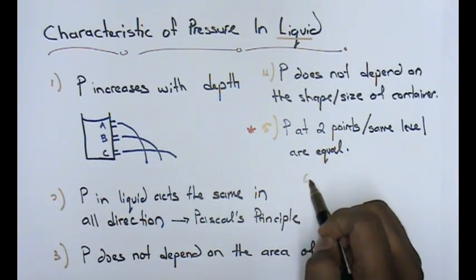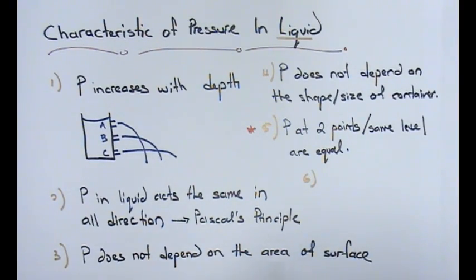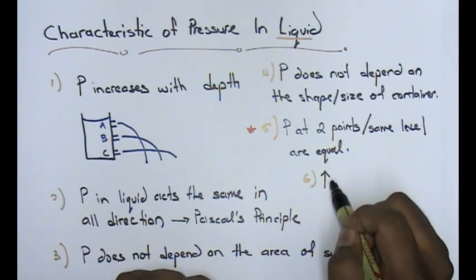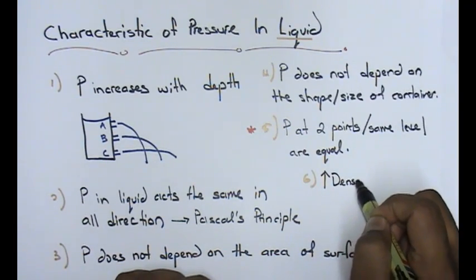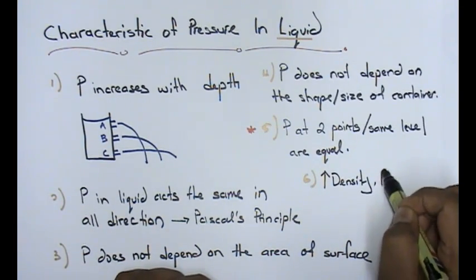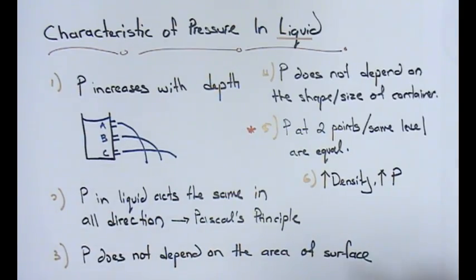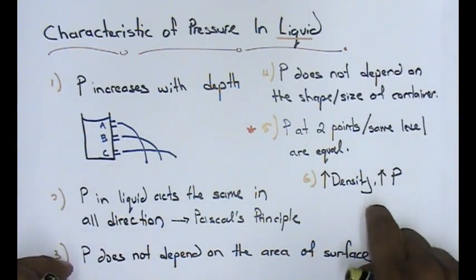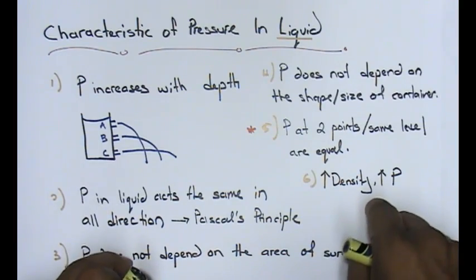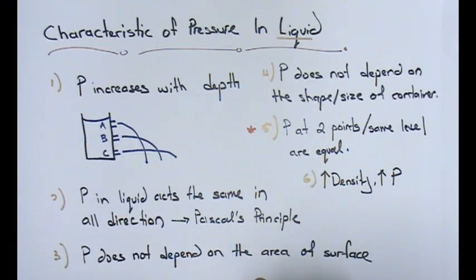Number six is higher density, meaning higher pressure. All together, one, two, three, four, five, six characteristics of pressure in liquid that you need to understand.